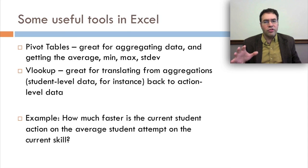So an example might be, how much faster is the current student action than the average student attempt, sorry for the typo. How much faster is the current student action than the average student attempt on the current skill?